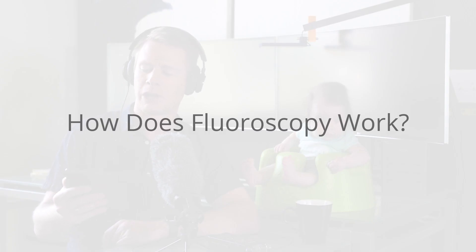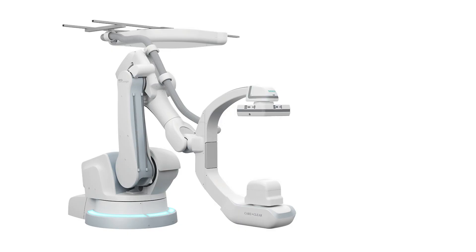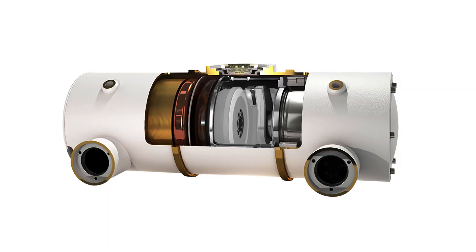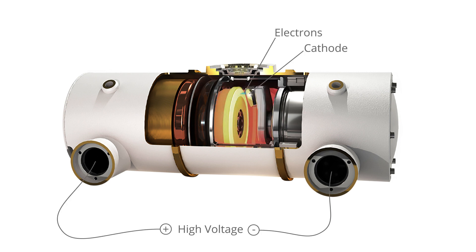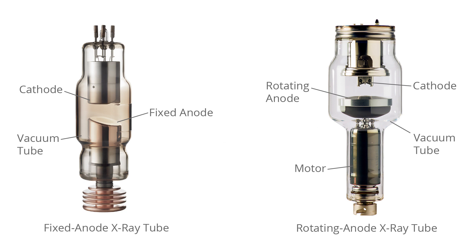Fluoroscopy functions using the same fundamental technology as projectional radiography. A typical fluoroscopy system consists of the following main components. X-ray tube: this is what produces the x-rays. An x-ray tube is a vacuum tube which applies a high voltage to accelerate electrons released from a hot cathode to an extremely high velocity. These high energy electrons collide with a metal anode producing x-rays. The voltage and anode material determine the energy of the resulting x-rays. An anode made of tungsten or a rhenium-tungsten alloy is typically used to produce high energy x-rays up to 150 kilo electron volts for imaging hard tissues.